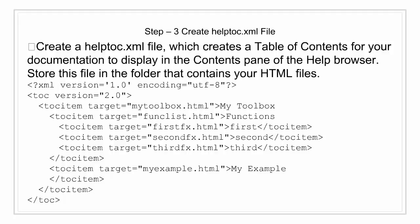The helptoc.xml file defines a hierarchy of entries within the contents pane of the browser. Each toc_item entry refers to one of your HTML help files, placed in the folder you described in the help_location tag. For example, you might have mytoolbox.html as a roadmap page, functionlist.html listing your functions, first_function.html, second_function.html, third_function.html as function reference pages, and myexample.html as an example. Within the top-level toc element you nest toc_item elements defining the table of contents structure. Each toc_item has a target attribute providing the file name — be sure file names and path names exactly match, as this is case-sensitive.